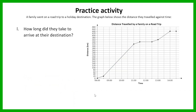How long did they take to arrive at their destination? We already established that they started their journey at 8 o'clock and arrived at their destination at 2 o'clock. We take 2 o'clock and subtract 8 o'clock, giving us a six-hour time interval. So it took them six hours to arrive at their destination.